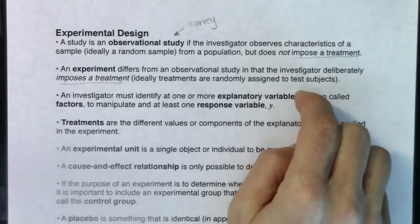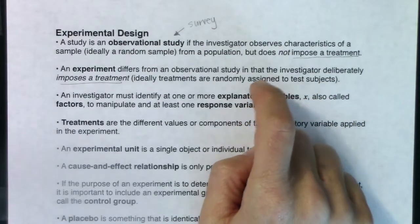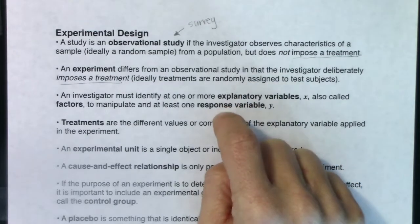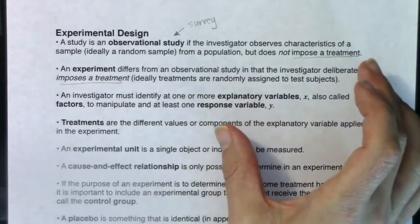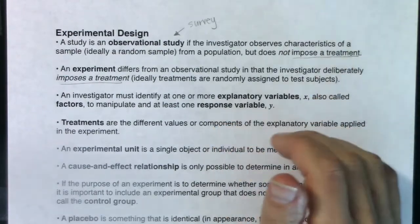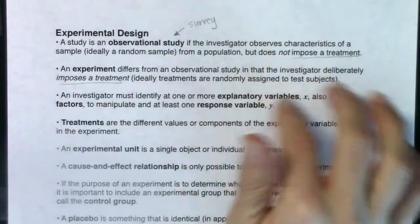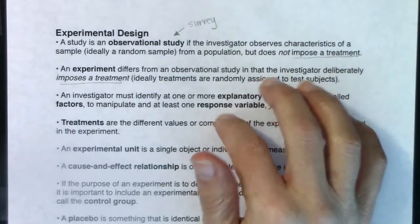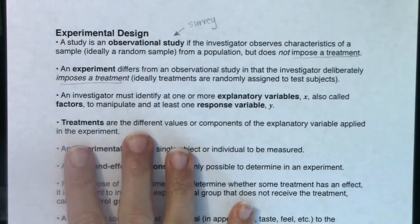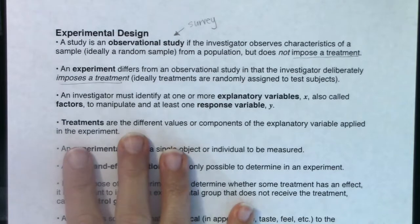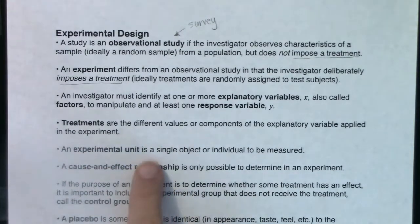Back in your math days you called them x and y — independent and dependent. Here we're going to call them explanatory and response variables. I've been trying to get us in the habit of asking: what is our explanatory variable, and what are we measuring at the end? Treatments are the different values or components of the explanatory variable applied in the experiment.